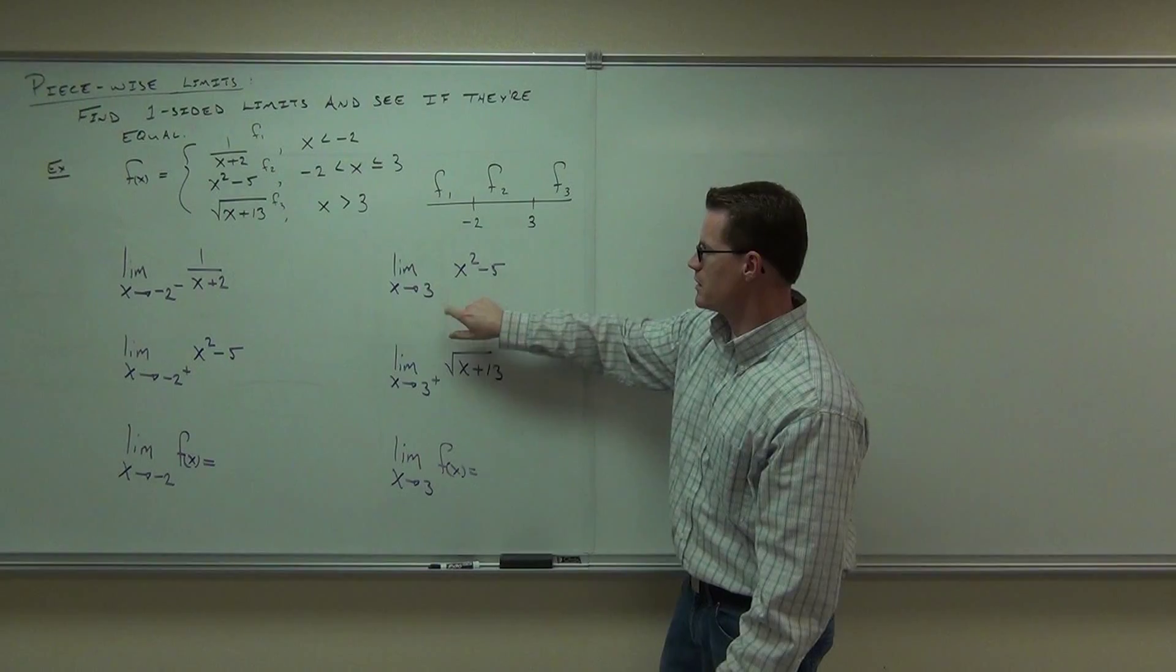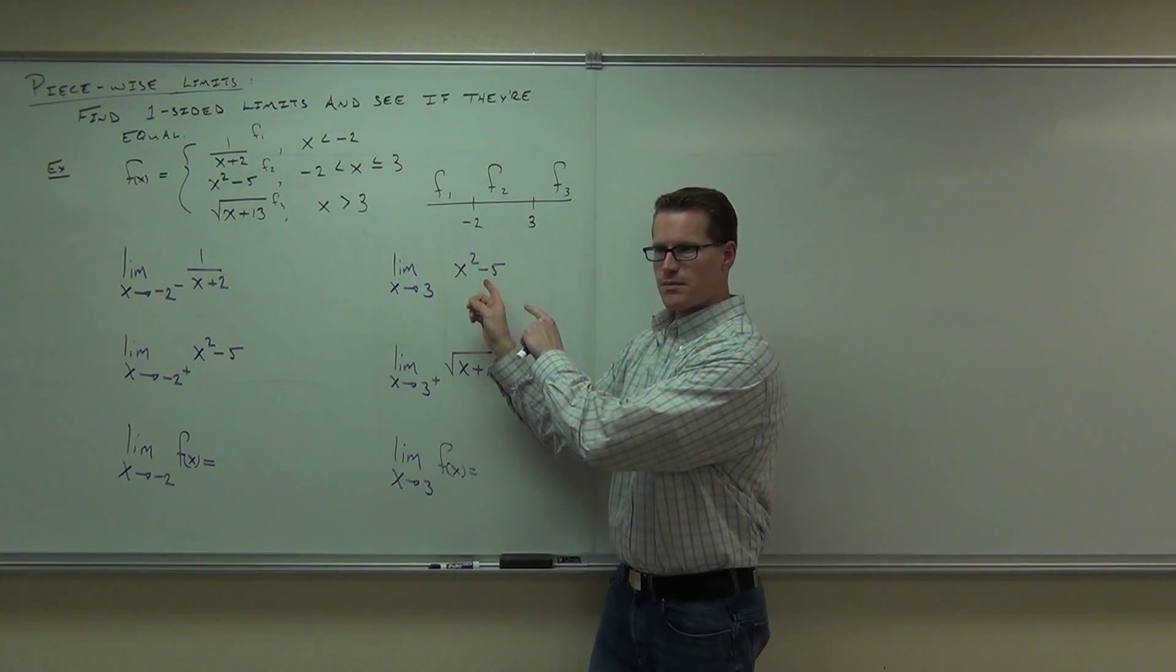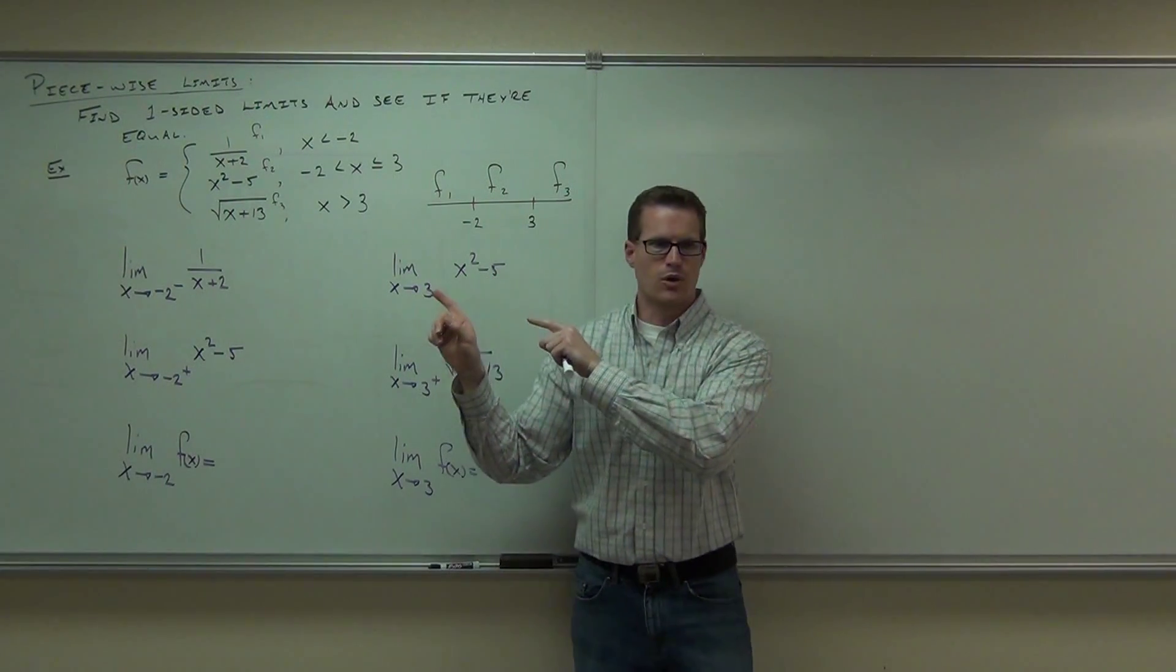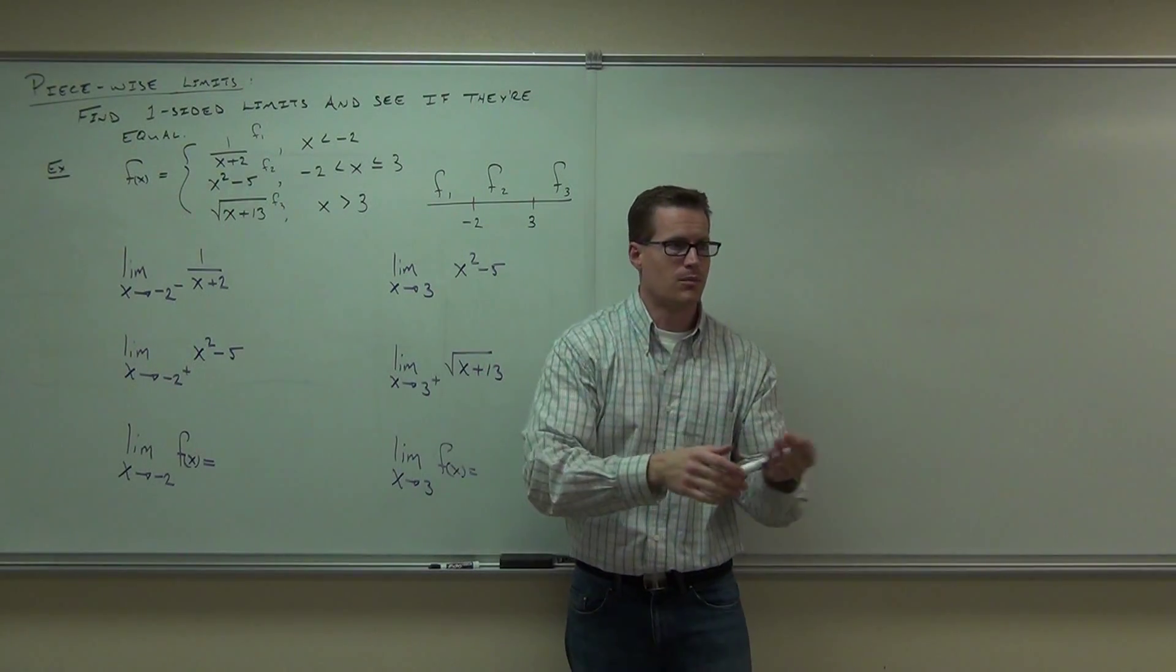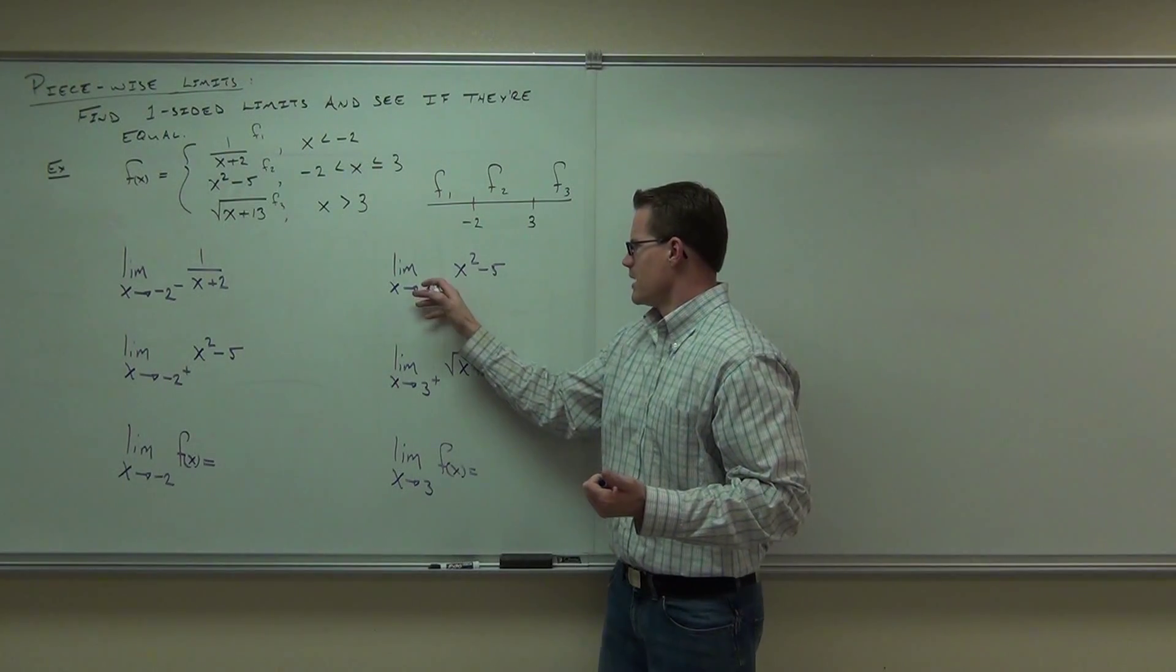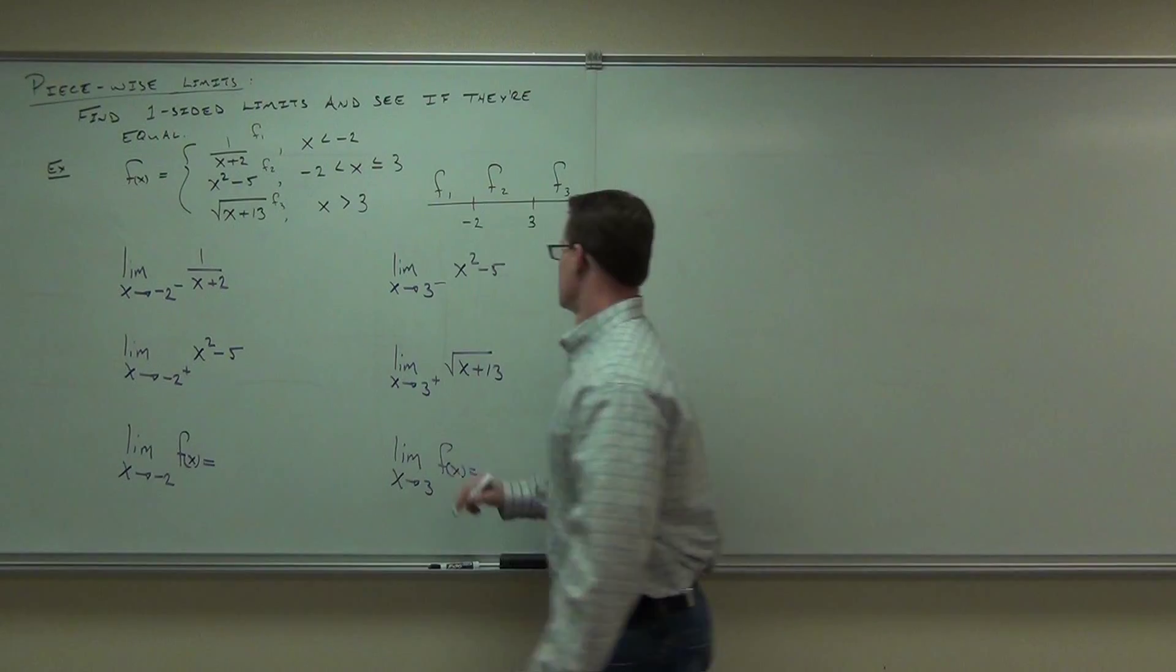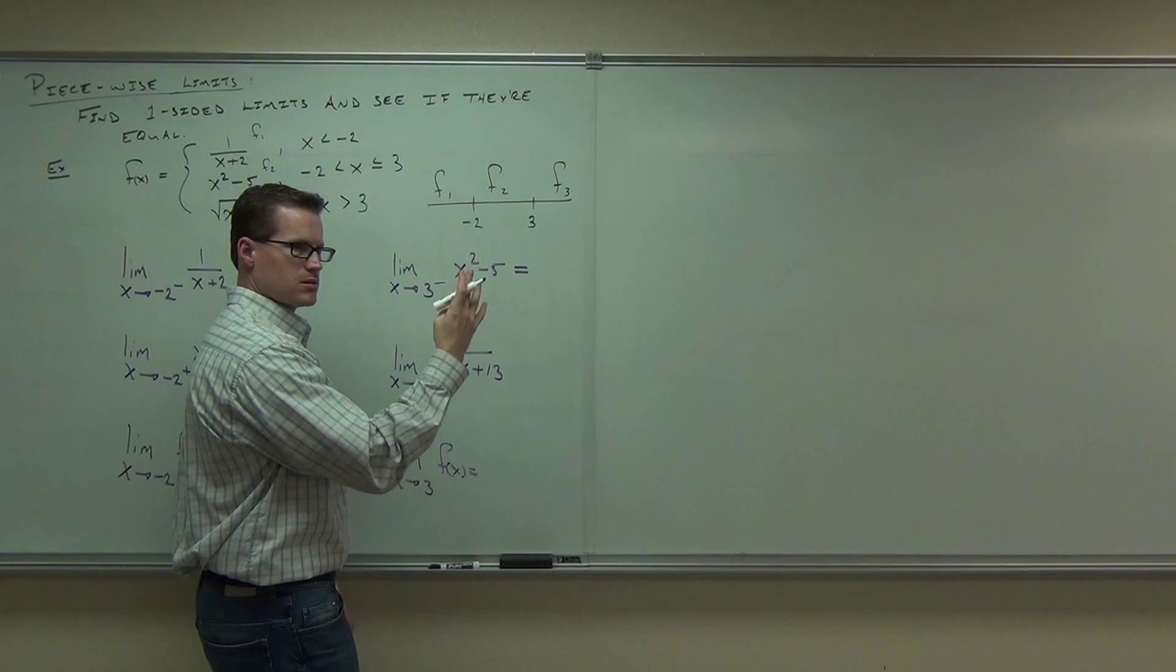Why? Because does the limit as x approaches 3 exist for that function? Absolutely, without equivocation, because that right there is a polynomial. And you know with polynomials, you can just plug in a number unless you have a problem. Well, if the limit at 3 exists, the limit from the left certainly has to. Plug in 3, you're going to get 4.